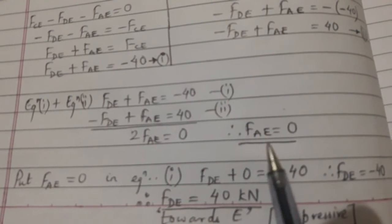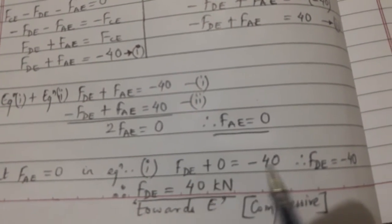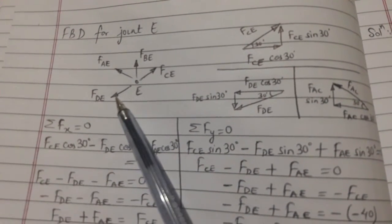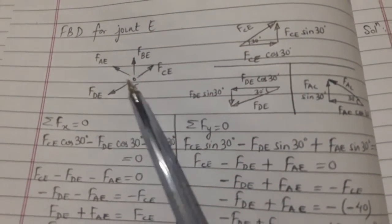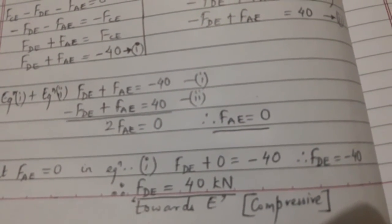When we put FAE equals zero in equation number 1, we got FDE is equal to minus 40. That's why our assumption that FDE is away from the point is incorrect, and FDE is towards the point E. That's why it is compressive.